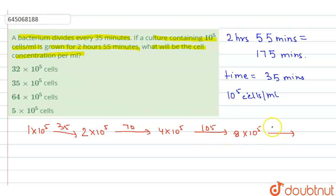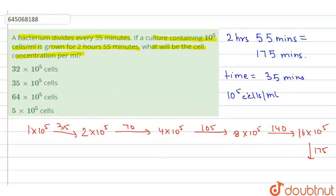Adding another 35 minutes to 105 minutes makes 140 minutes, and at 140 minutes it becomes 16 × 10^5. Adding 35 minutes more to 140 minutes makes 175 minutes, and it grows up to 32 × 10^5 cells per milliliter.